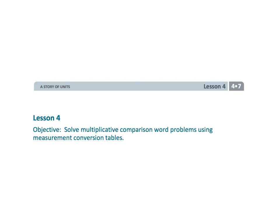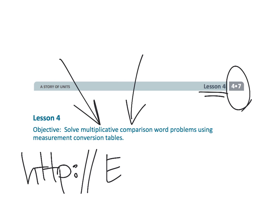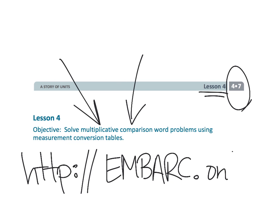That wraps up fourth grade module 7, lesson 4: solving multiplicative comparison word problems. If you want more help with your mathematics, go to embark.online — there's a lot more stuff there.